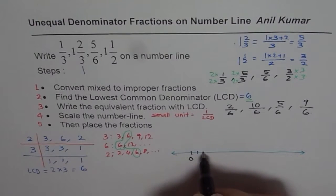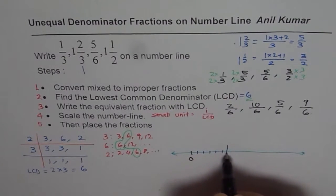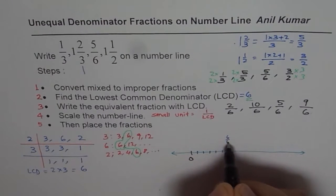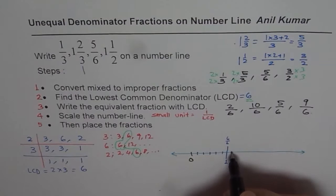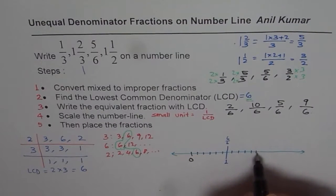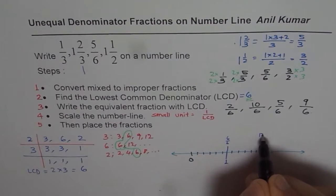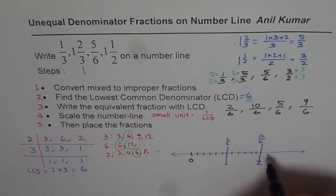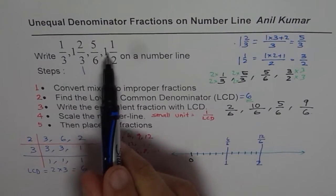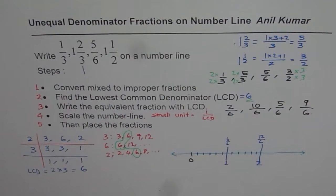So this is 1 over 6, 2 over 6, 3 over 6, 4 over 6, 5 over 6 and 6 over 6. So this is 6 over 6 or 1. Then we have 7, 8, 9, 10, 11, 12. So we have 12 over 6 or 2. So this is 2 for us. So the numbers are actually less than 2. So this much is enough for us.